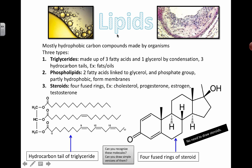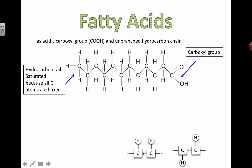So these types of four-ringed structures you should be able to recognize as special types of lipids called steroids. You don't have to be able to draw these, but you should be able to recognize what they look like. Similarly, you should be able to recognize a specific type of lipid called a triglyceride molecule.